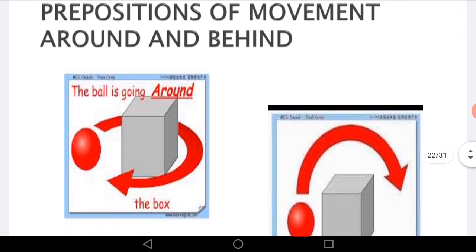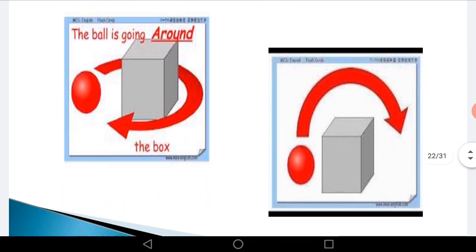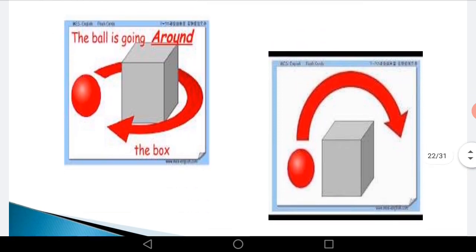Now let us understand through pictures — prepositions of movement: 'around' and 'behind.' If you see the first picture, the ball is going around the box; the movement of the ball is shown. In the other picture, the ball is kept behind the box. Did you understand the difference? These pictures are conveying the movement of the ball by using specific words like 'around' and 'behind.'